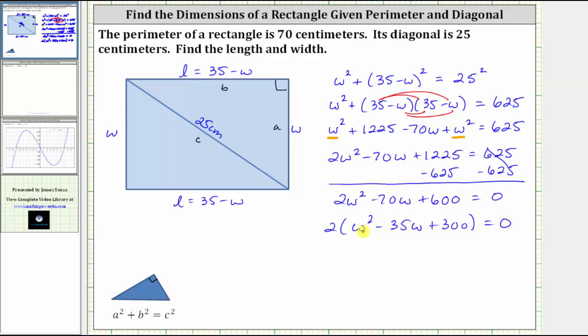If this quadratic in the parentheses does factor, it will factor into two binomial factors. Because we have a W squared here, which is equal to W times W, we have a factor of W here and a factor of W here. And the constant terms, or the second terms in each binomial, will be the factors of 300 that add to negative 35. That's not an easy question, but negative 15 times negative 20 is positive 300, and negative 15 plus negative 20 is negative 35, which means one binomial factor is W minus 15, and the other binomial factor is W minus 20.